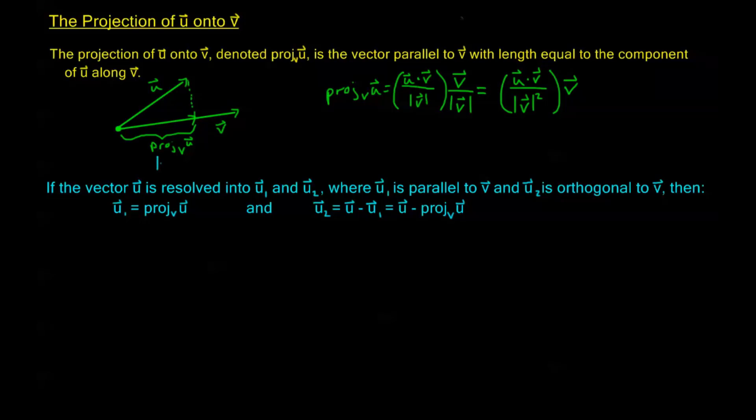Let me write that here. This projection I can call u₁, and if I call this vector going from the terminal point of u₁ to the terminal point of u as u₂, then we get that u equals the sum of u₁ plus u₂. So if we resolve it in this way, then u₁ is the projection and u₂ is the orthogonal vector with respect to v that adding to u₁ gives us u.